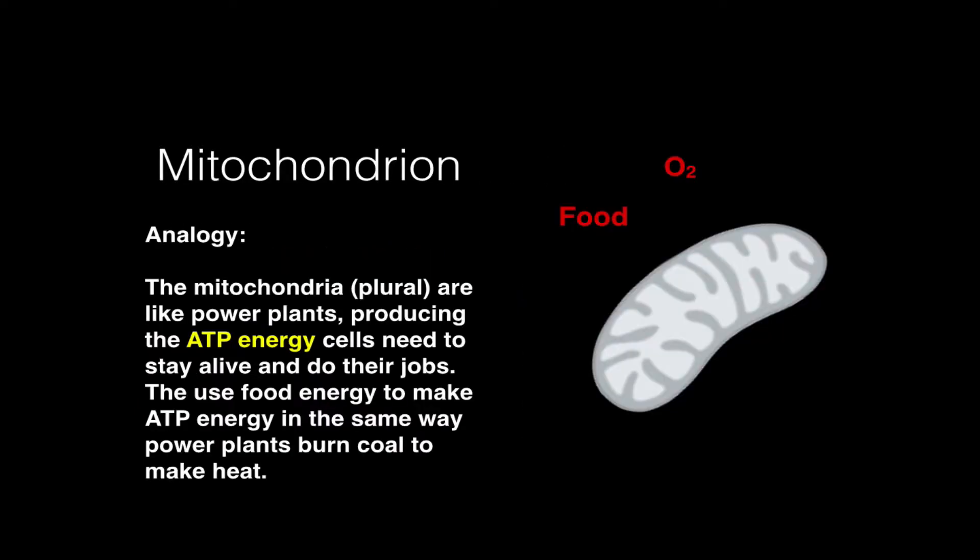I made a little animation here to show you what I'm talking about. The analogy for mitochondria that you've probably already heard — the word mitochondria is plural for mitochondrion — is the power plant of the cell. They're called this because they produce ATP energy, and all cells need ATP energy to stay alive and do their jobs. In order to make ATP energy, the mitochondria needs two reactants: food and oxygen. It can then process food and oxygen into ATP energy.